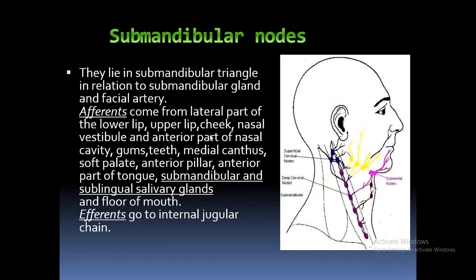Then the submandibular nodes. They lie in the submandibular triangle in relation to the submandibular gland and facial artery. Their afferents come from the lateral part of the lower lip, the upper lip, the cheek, nasal vestibule, anterior part of nasal cavity, gums, teeth, medial canthus, soft palate, anterior pillar, anterior part of tongue, submandibular and sublingual salivary glands, and the floor of mouth. Their efferents go to the internal jugular chain.